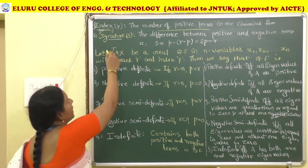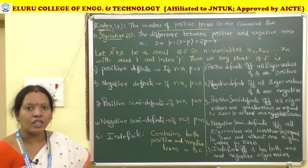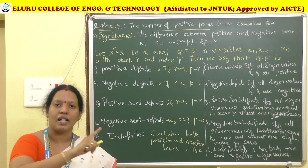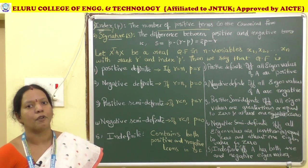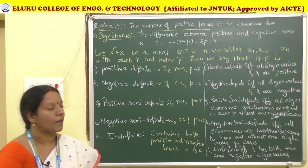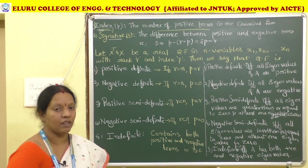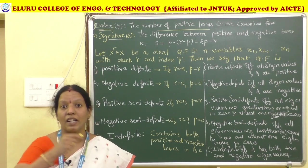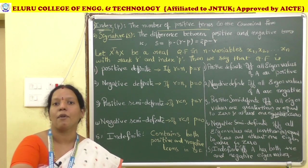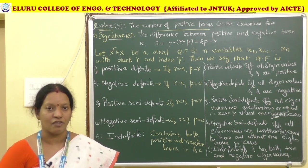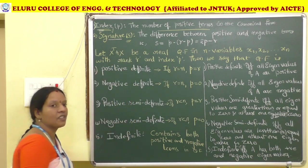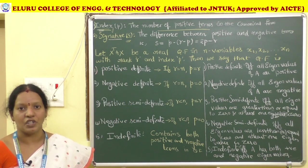The second terminology is signature. Signature is nothing but the difference between the number of positive terms and the number of negative terms in the quadratic form. If we convert this quadratic form into canonical form, the difference between positive and negative terms is denoted by S and it is called the signature.